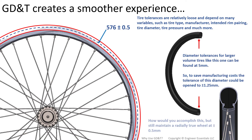Most tire tolerances are very loose and depend on many variables such as tire type, manufacturer, intended rim pairing, tire diameter, tire pressure, and many more. Diameter tolerances for larger tires like this can be found at five millimeters.